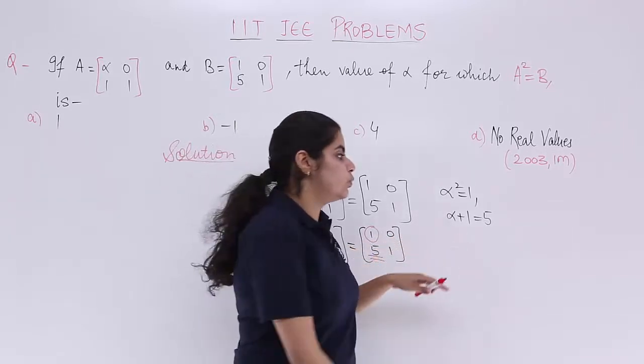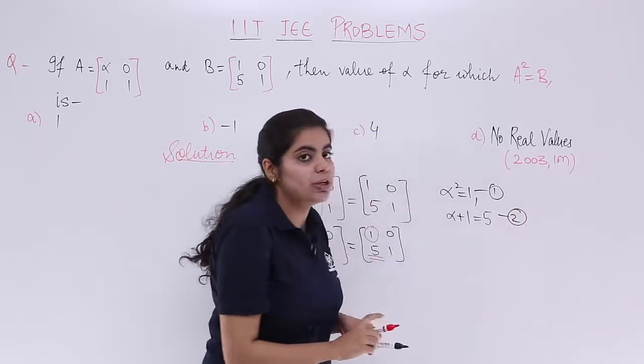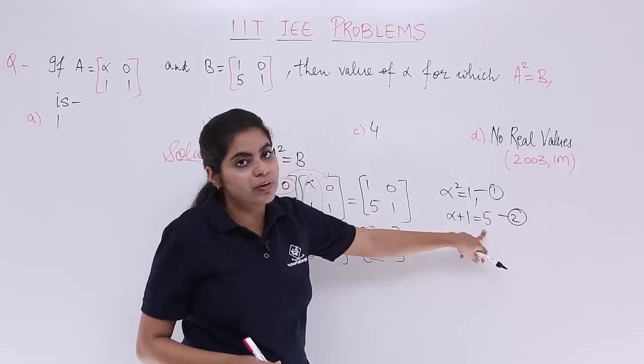If you see equation number 2, if this is 1, this is 2. And if you see equation number 2, you have alpha = 5 - 1 which is 4.